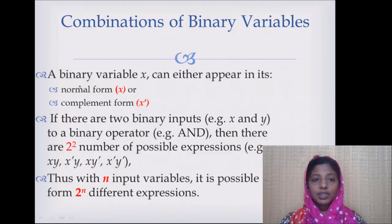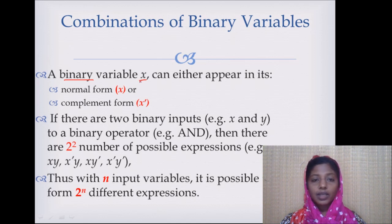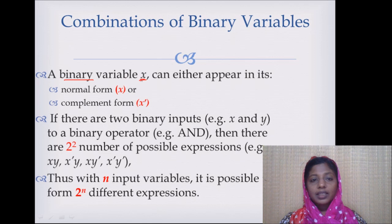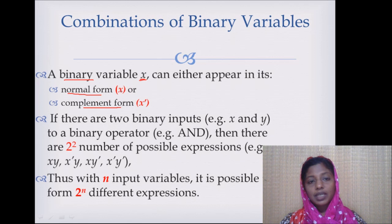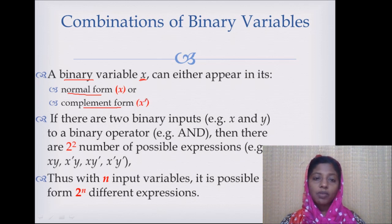Given any Boolean expression, a Boolean variable — also called a binary variable — can take any one of 0 or 1 as value. A Boolean variable can appear in a Boolean expression either in the normal form or in the complemented form. If we simply represent x, it is in the normal form. If we have the complement, we represent it with a prime or a bar.